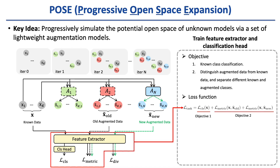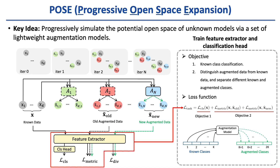For training the feature extractor and the classification head, the objectives are two aspects. The first is known class classification, for which we apply a cross-entropy loss. The second objective is to distinguish augmented data from known data and separate different known and augmented classes. Different from existing works taking all simulated open set samples as a single open class, we assign different labels to augmented data from different known classes, as they carry different hybrid fingerprints. We apply a metric loss to separate different classes.